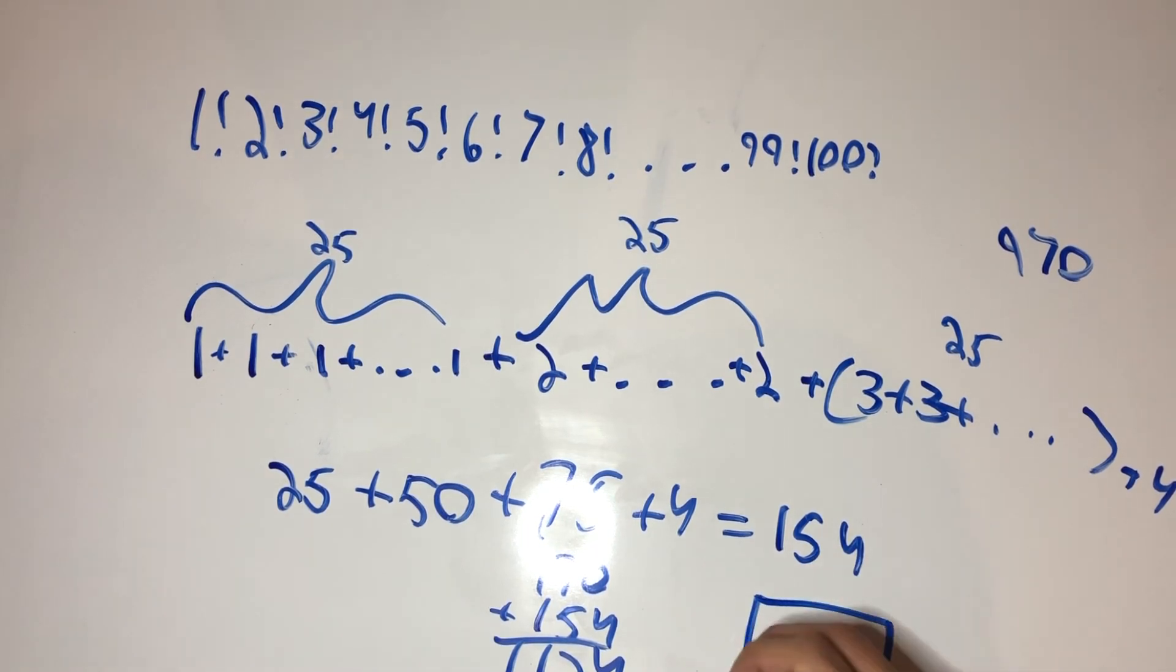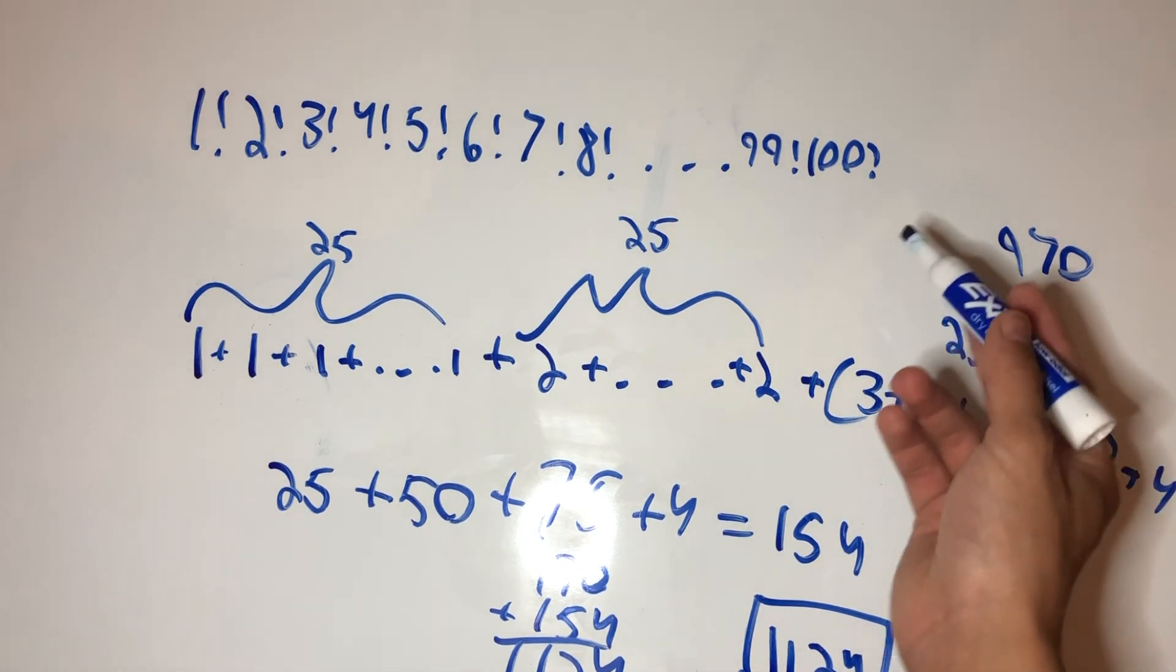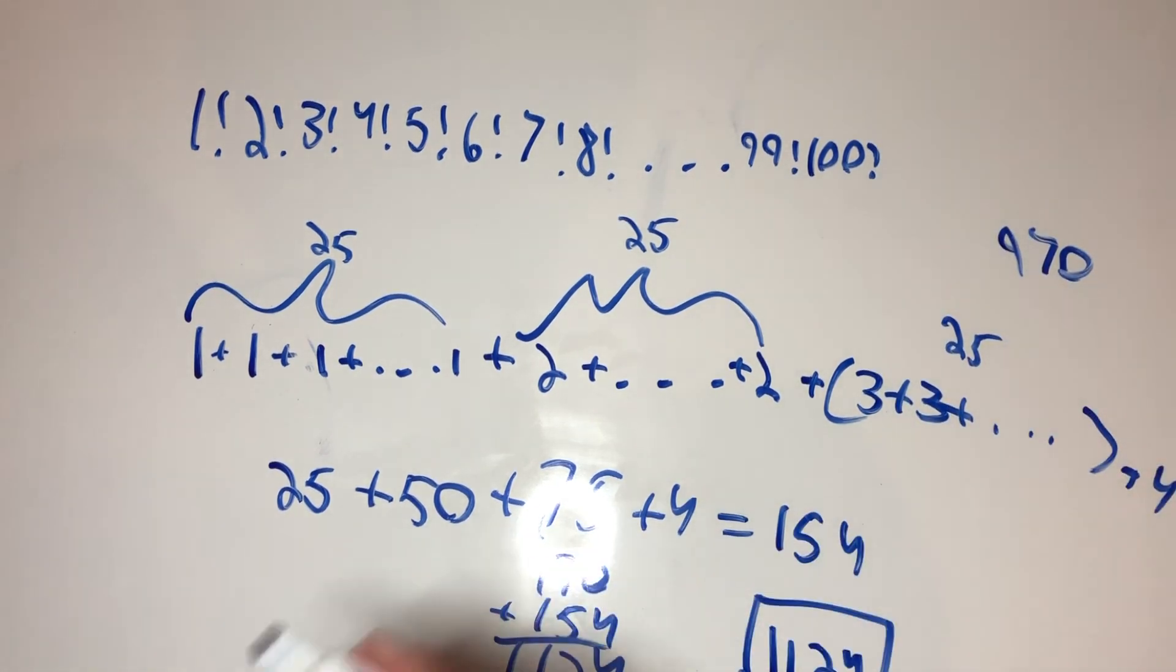Now, if we had to keep going past 100, there will be more for if we had to reach 125, because then we would have missed another factor of 5. But, in this case, this is all we need to do, and that is our answer.